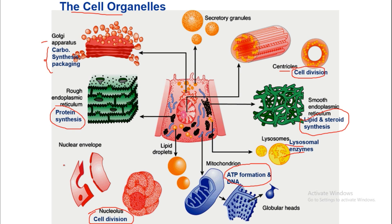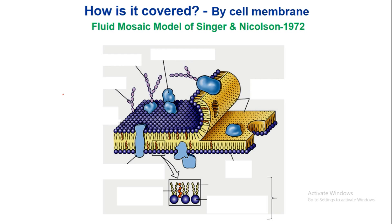How is the cell covered by the cell membrane? It was discovered by Singer and Nicolson in 1972, and the widely accepted model is the fluid mosaic model of Singer and Nicolson, 1972. The cell membrane has a lipid bilayer structure.